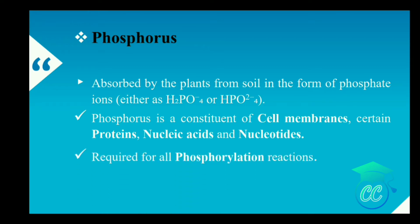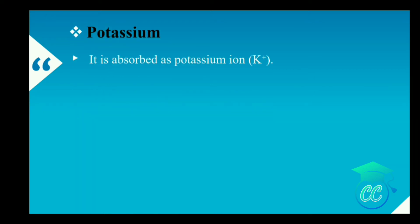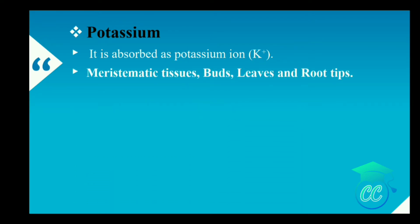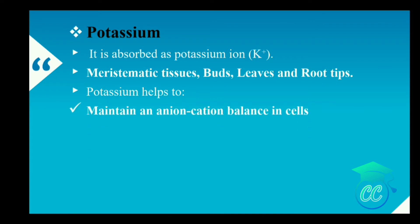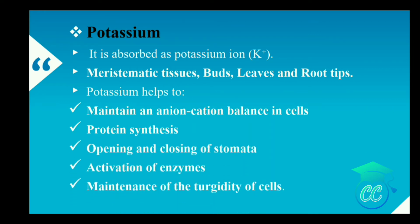Next, potassium. Plants absorb potassium in the form of potassium ions, and it is found in meristematic tissues, buds, leaves and root tips. Potassium helps to maintain the anion-cation balance in the cell, protein synthesis, opening and closing of stomata, activation of enzymes and maintenance of turgidity of the cells.